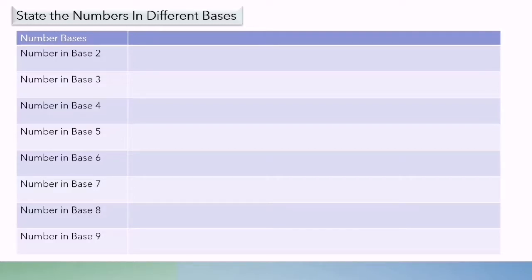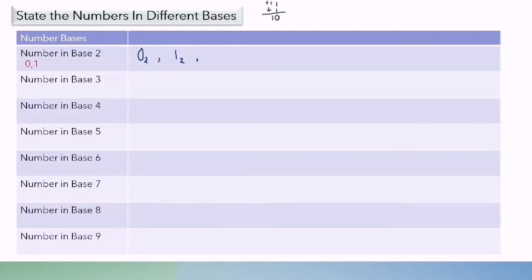Number in base 2. In number base 2, we have digits 0 and 1 only. If I write the numbers in sequence, it will be: 0 base 2, 1 base 2. But I cannot write 2 base 2 because I only have digits 0 and 1. So 1 plus 1 equals 2, but I cannot write 2 here. It is full, so I put 0 and add 1 to the front. So it is 1, 0 base 2. The next number is 1, 1 base 2.